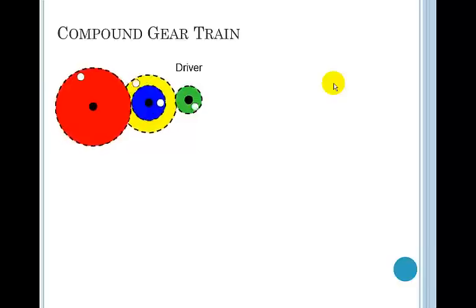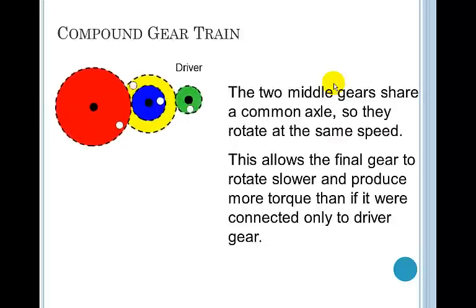And so in that scenario, now you can see that the red gear is much larger than the blue gear, so it has a much reduced speed. How do we calculate the overall gear ratio for that? So we say the two middle gears have a common axle, so they're going to rotate at the same speed. What this let us do is, the final gear rotates slower and produces more torque than if it were connected directly to the driver gear.